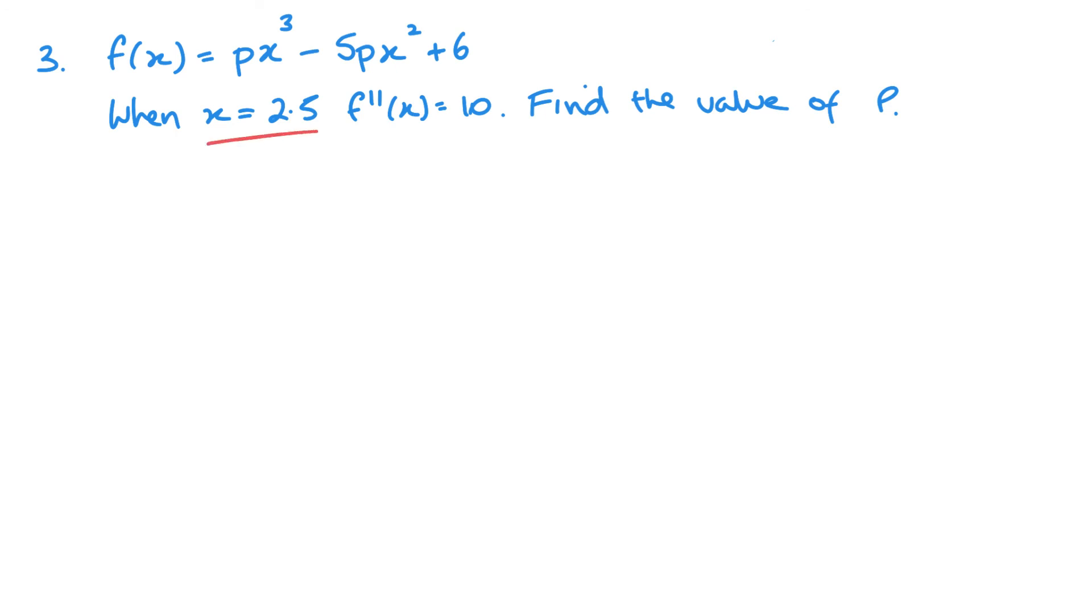So, we've got some information here, x is 2.5, my second derivative is 10, so that's what I need to do. So, we get 3px squared minus 10px, and the second derivative is 6px minus 10p.